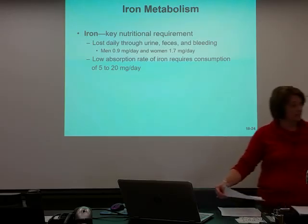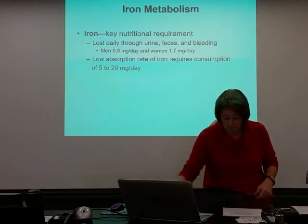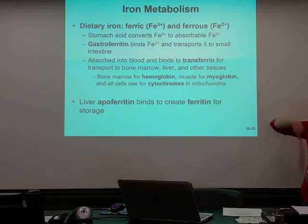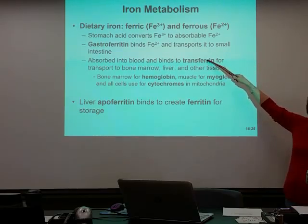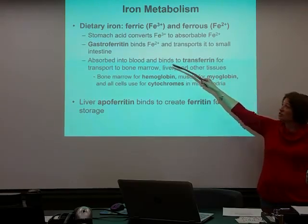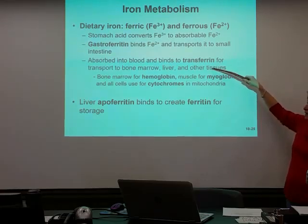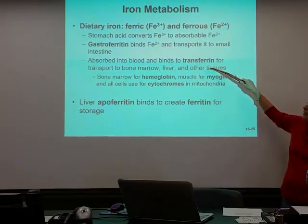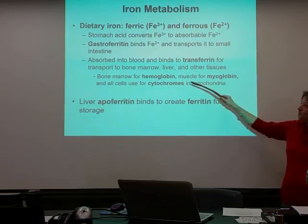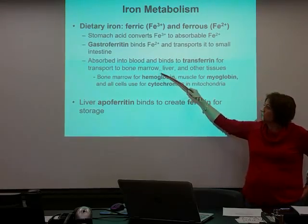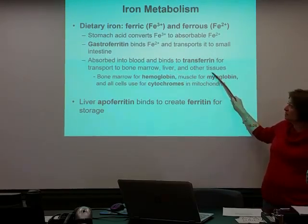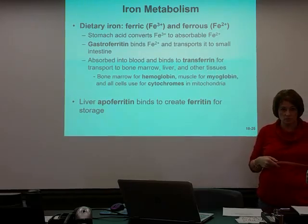So to recap: the dietary iron we take in comes in Fe3+ and Fe2+ forms. Hopefully in the stomach it binds to gastroferrin and gets transported to the small intestine, where it's absorbed into the blood via transferrin. Transferrin then carries it to areas that need it — the bone marrow, the liver, and other tissues such as skeletal muscle.